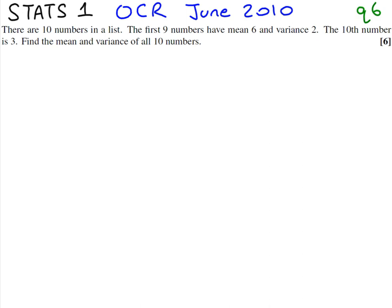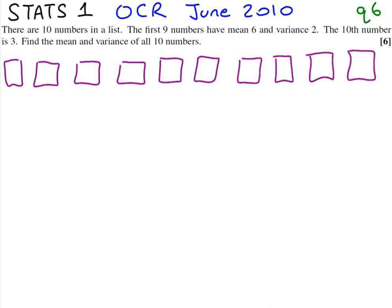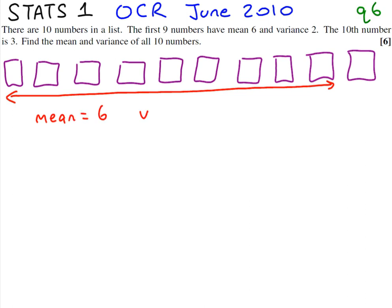It's 10 numbers in a list. The first 9 numbers have a mean of 6 and a variance of 2. I'm going to draw out 10 cards representing spaces for 10 numbers. Our job is to think: if we know about these 9 numbers, their mean is 6 and their variance is 2, what is going to be the total mean and variance if we add on the number 3? That's our job.